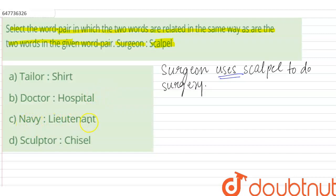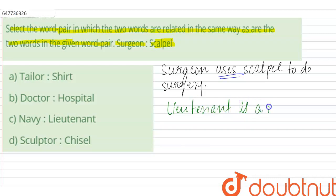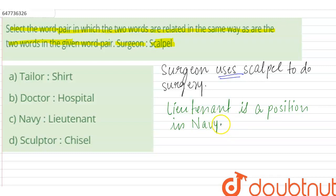If we look at option C — navy and lieutenant. Lieutenant is a position in the navy, just as major is a position in the army. So lieutenant is a rank within the navy, not a tool, and option C is discarded.